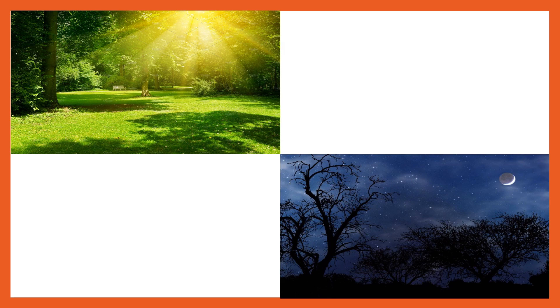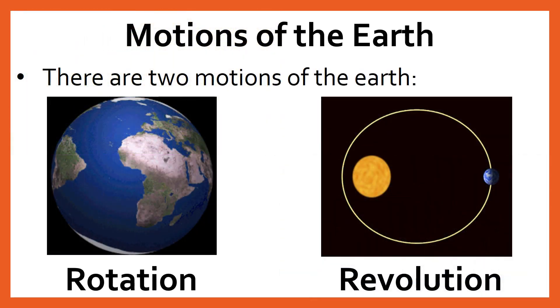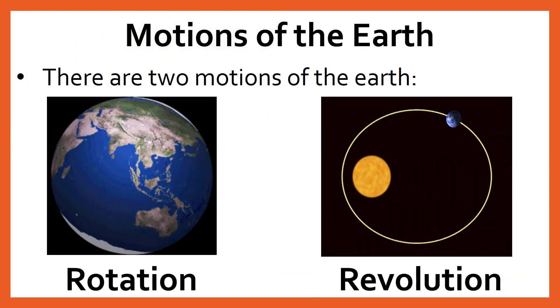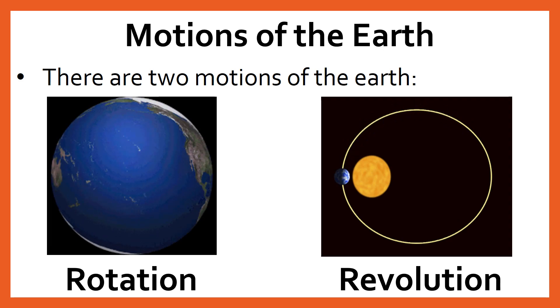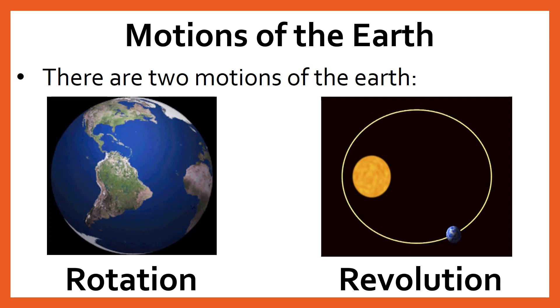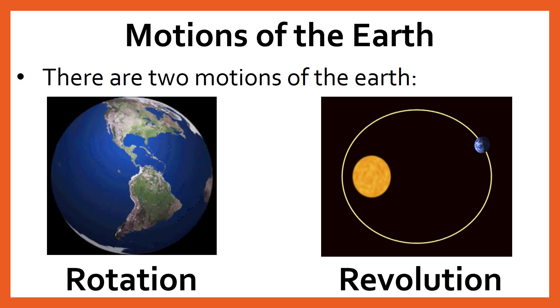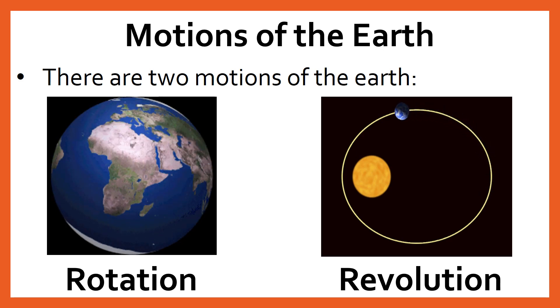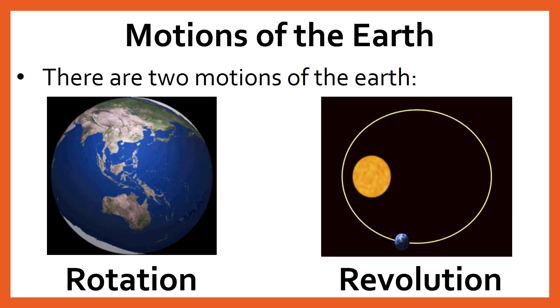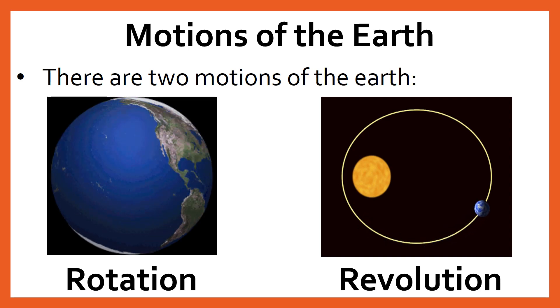Well, that is because our earth is not standing stationary — it is rotating all the time. So, students, like other planets, there are two motions of the earth: number one, rotation, and number two, revolution. Now, let's look into each of them in further detail.